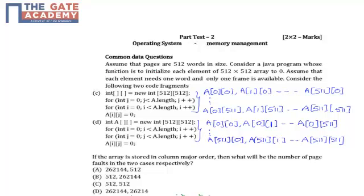Assume that pages are 512 words in size. Consider the Java program whose function is to initialize each element of a 512 by 512 array to 0. Assume that each element needs one word and only one frame is available. Consider the following two code fragments.